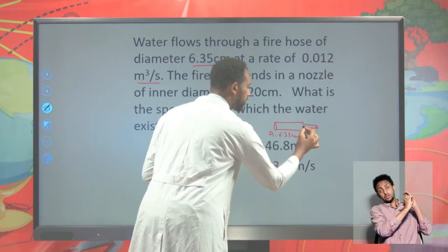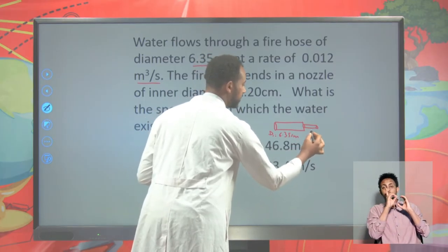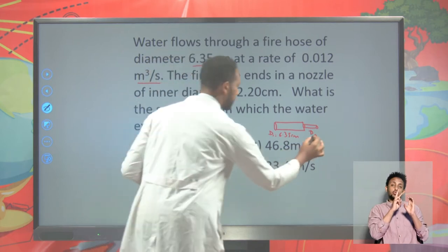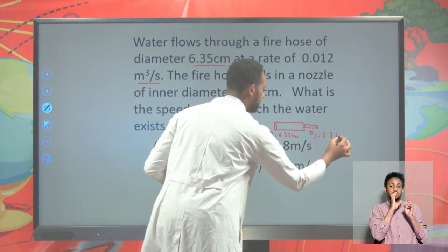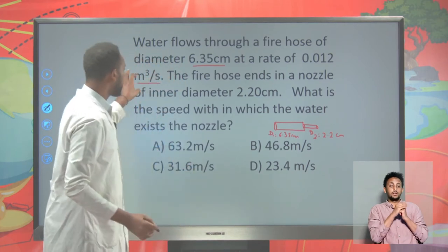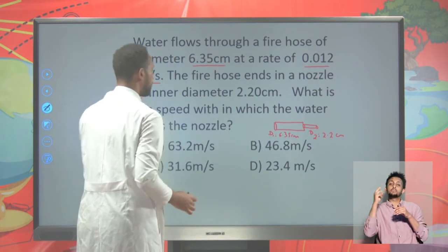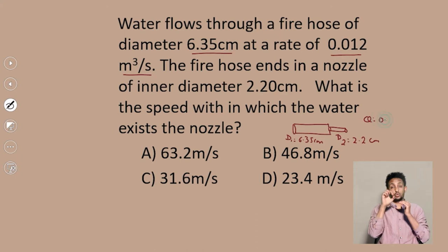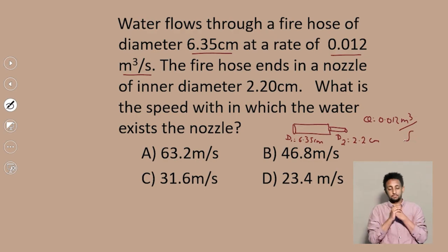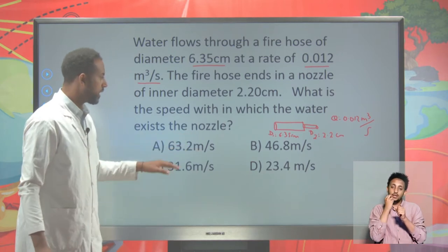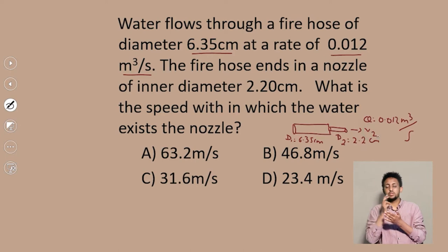The hose ends up at a nozzle. The flow rate Q is 0.012 m³/s. The question is: what is the speed V2 at which the water exits the nozzle? We don't know the speed at the hose either.